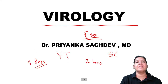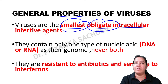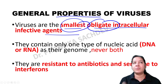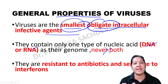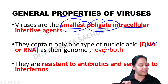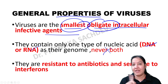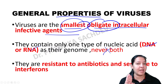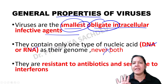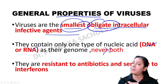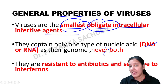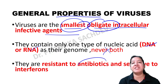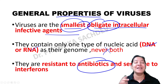Viruses will survive only inside the host cell - they replicate and cause disease inside the host cell. Bacteria, on the other hand, can survive and replicate outside the host cell. So I can say viruses are obligate - meaning compulsory - obligate intracellular organisms. In viruses, we have either DNA or RNA, never both.